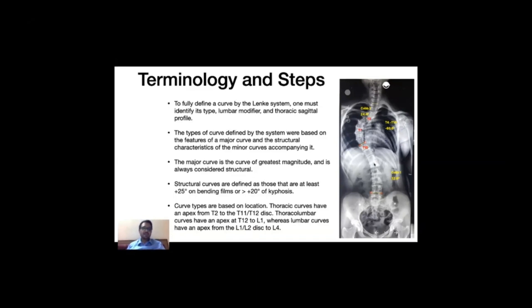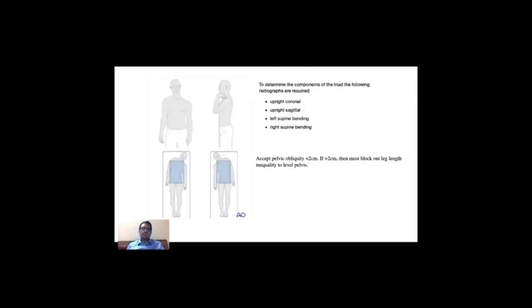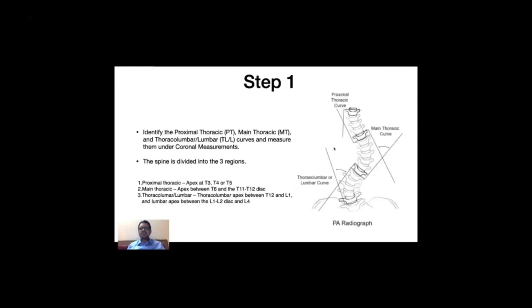We now understand what the major curve is, what the minor curves are, and how to determine whether a minor curve is structural based on side-bending radiographs and sagittal profile. We need four radiographs to determine this: a standing coronal profile, a standing sagittal profile, and supine bending views. If there is a pelvic obliquity of less than 2 cm it can be neglected, but if more than 2 cm, a block must be given to correct the pelvis to determine the curve type.